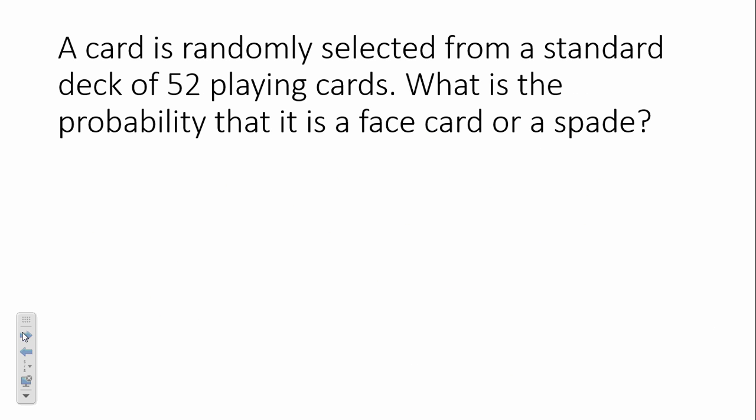All right. Next example. So, a randomly selected card from a standard deck of 52 playing cards. What's the probability that it is a face card or a spade? So, our A means that it's a face card. B is that it's a spade. And, we want the probability of A or B. It's the probability that it's a face card or a spade. Whenever you see an or, you have to add. So, how many face cards do we have in a standard deck of playing cards? You can look at the 16. Jacks, kings, and queens, right? Times four suits. Total of 12. So, we have 12 face cards out of 52.